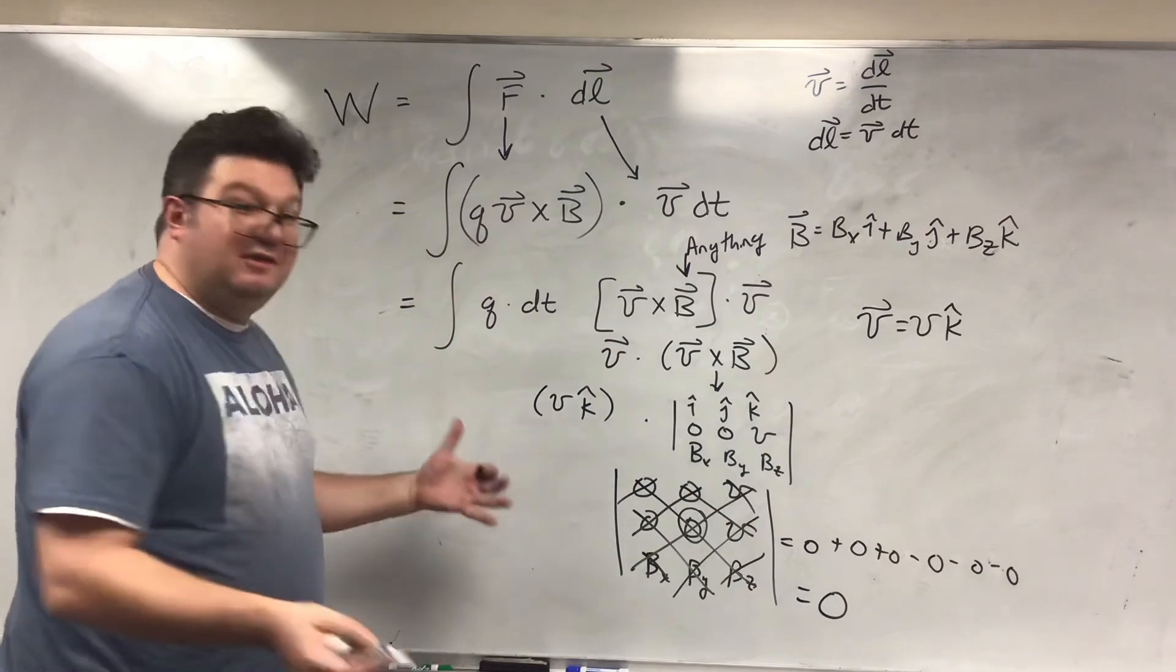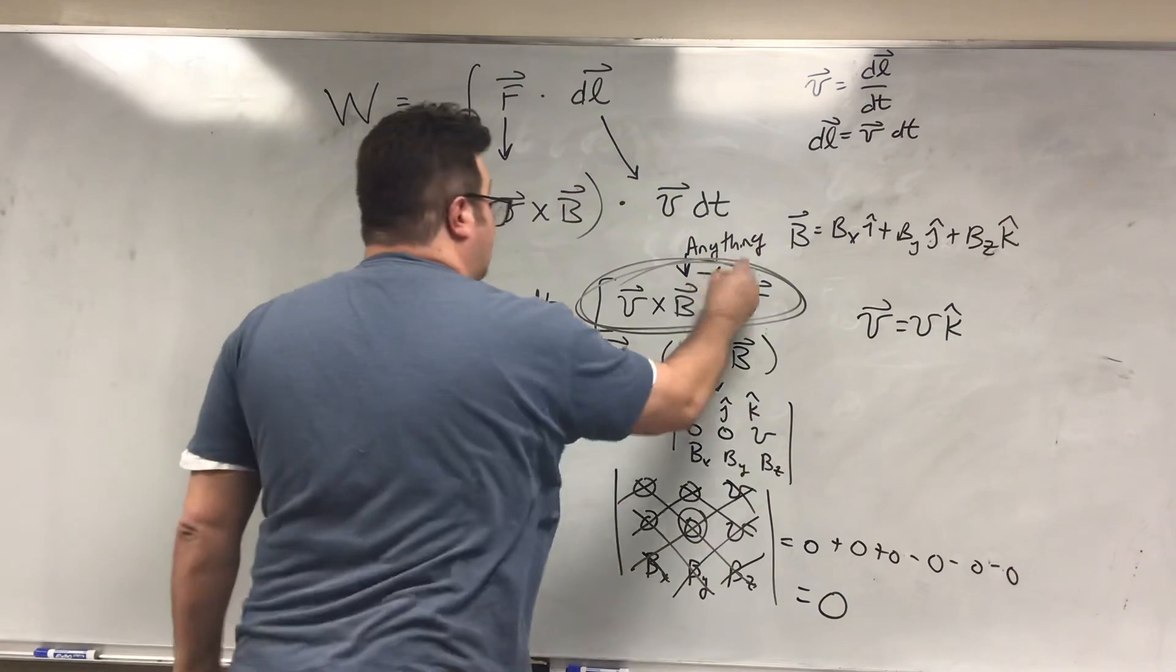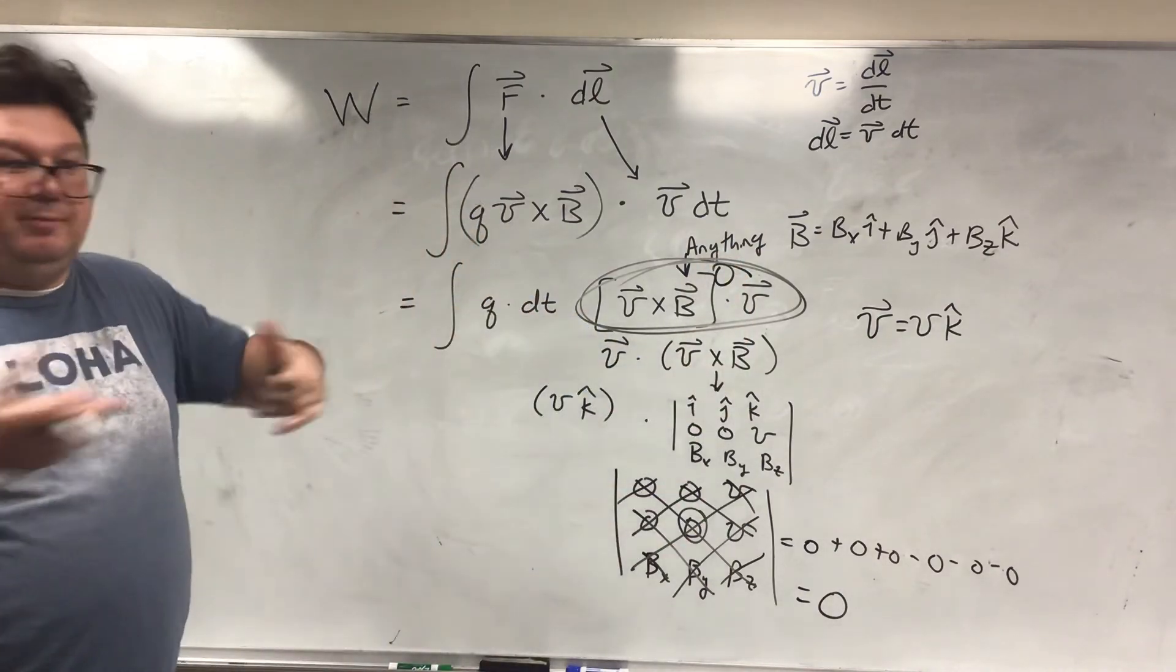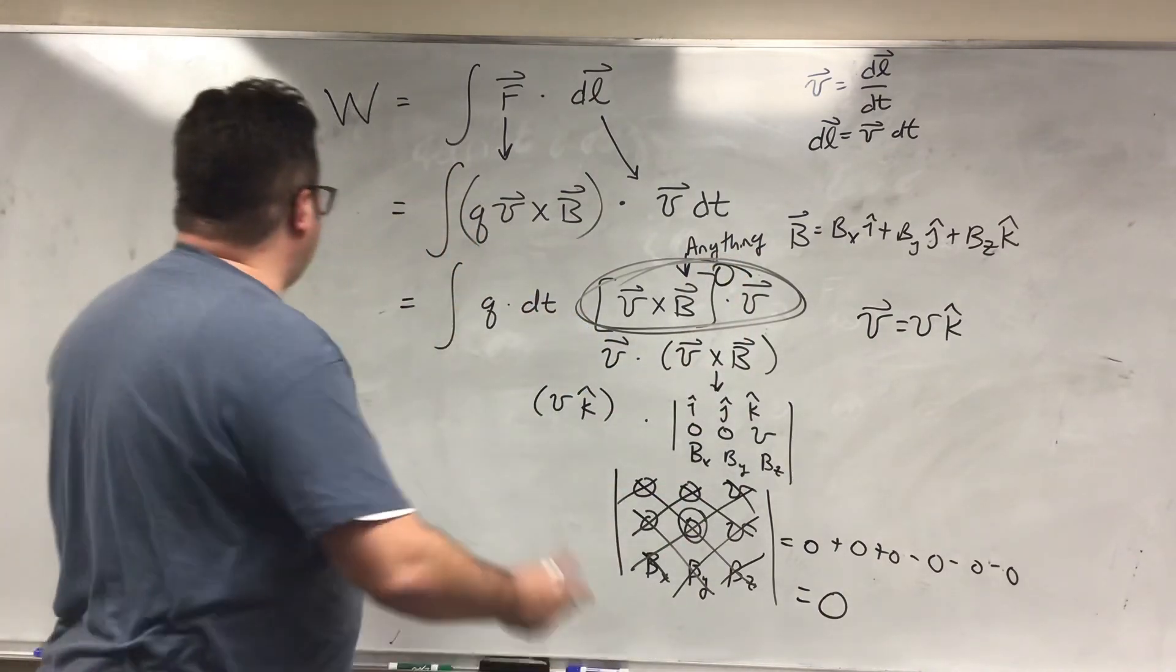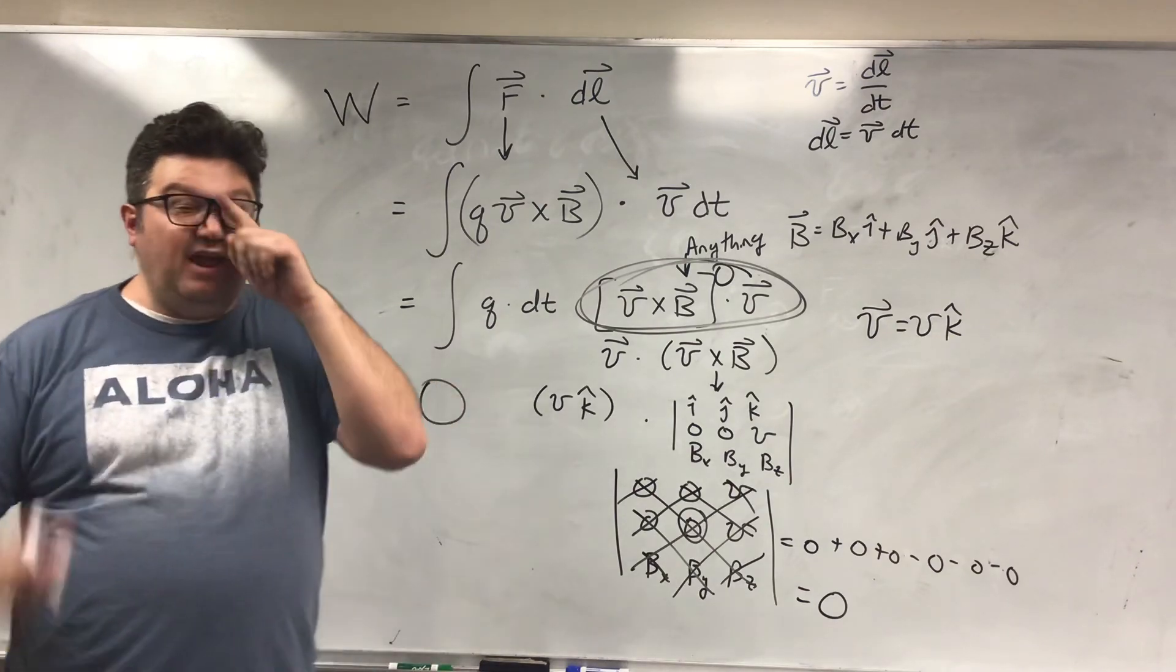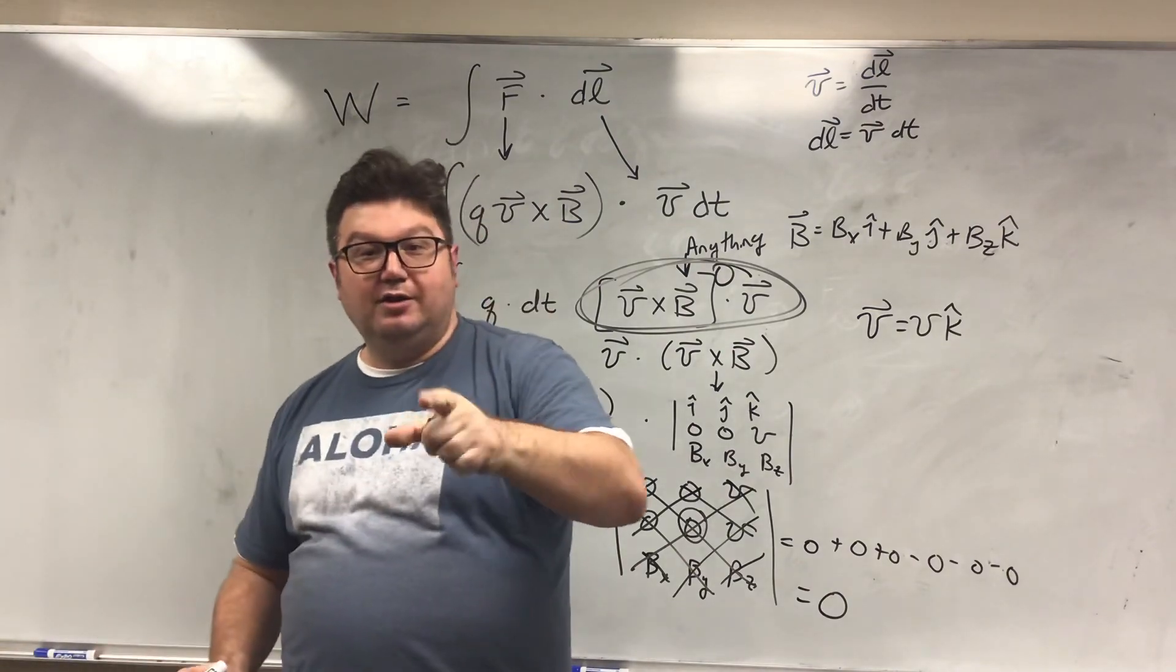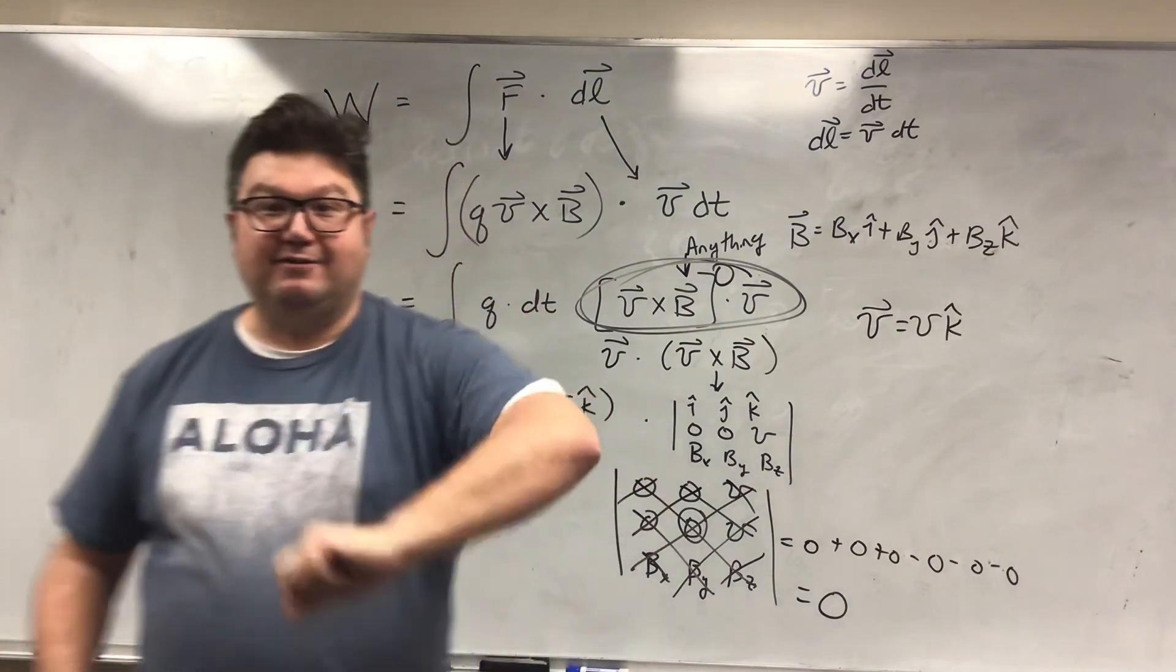So what that basically is saying is that this quantity in the integral is zero. So it doesn't matter. You're going to do some integral, but you're integrating zero. So the whole thing becomes zero. There is no work done by magnetic fields. No work done by magnetic fields.